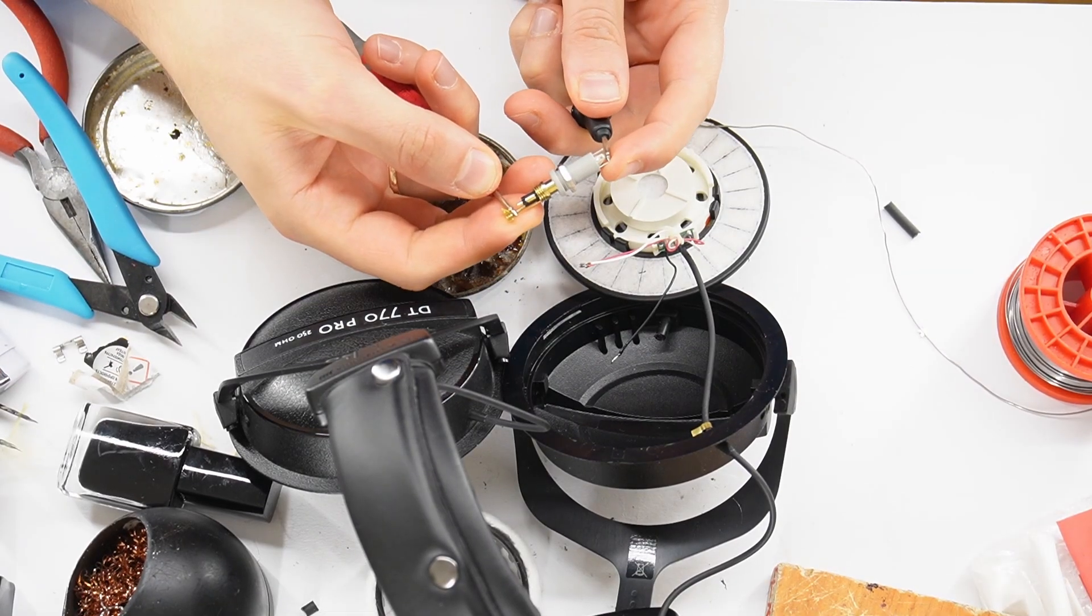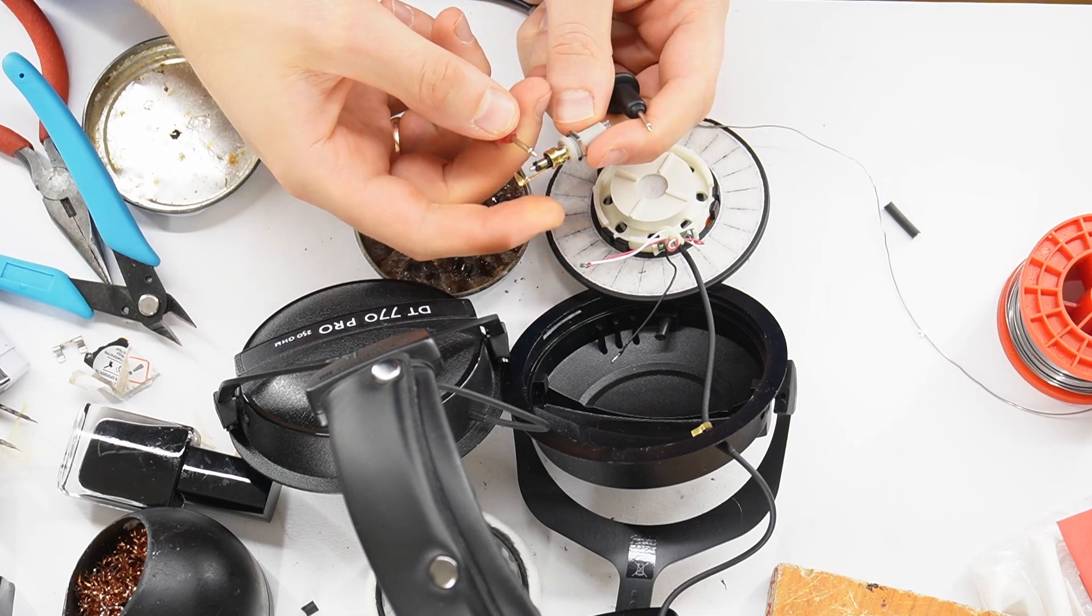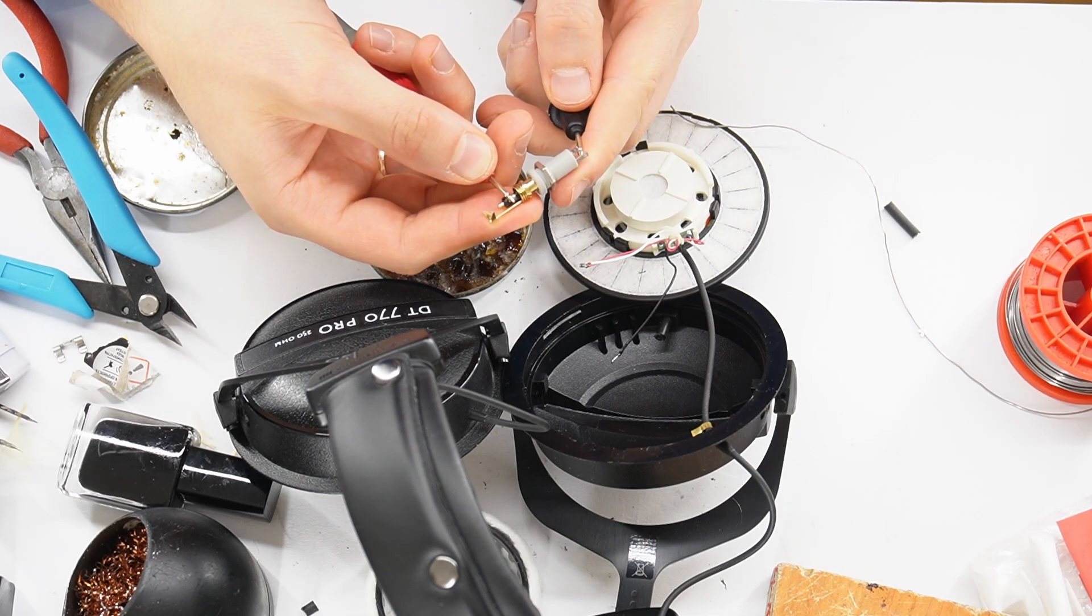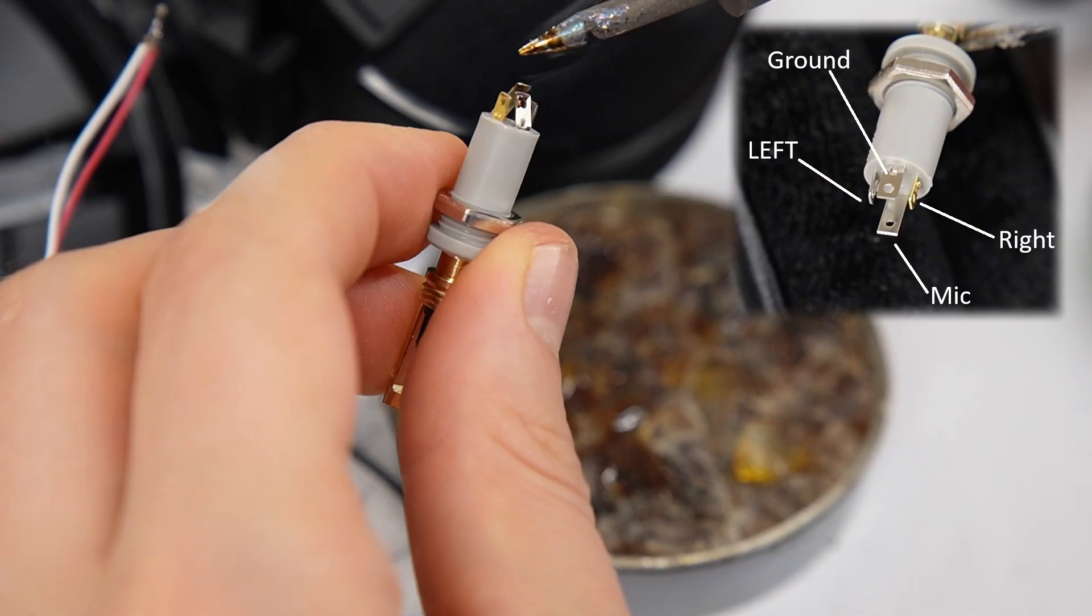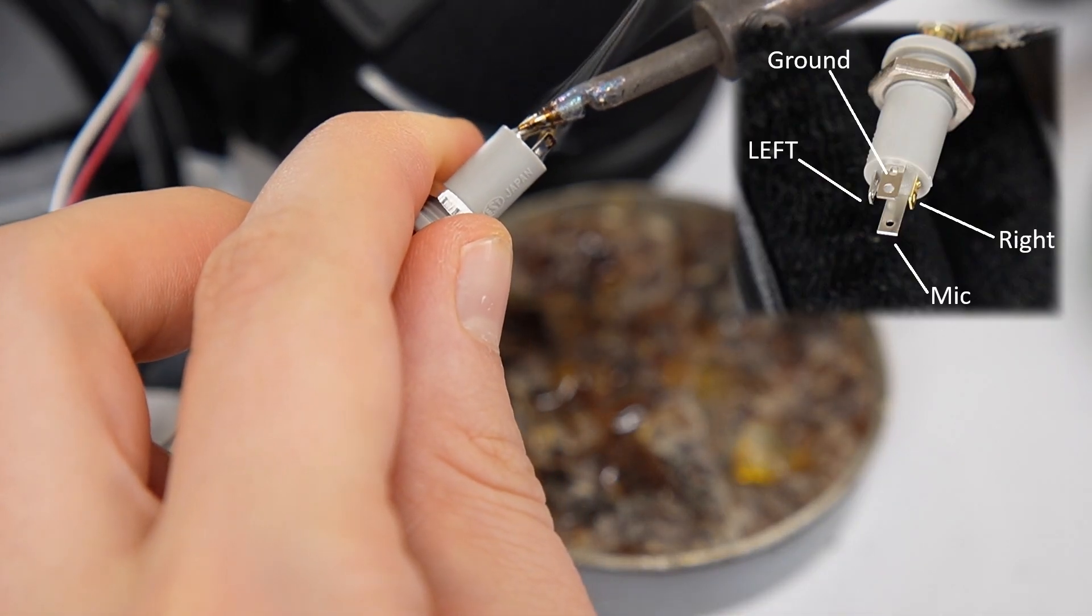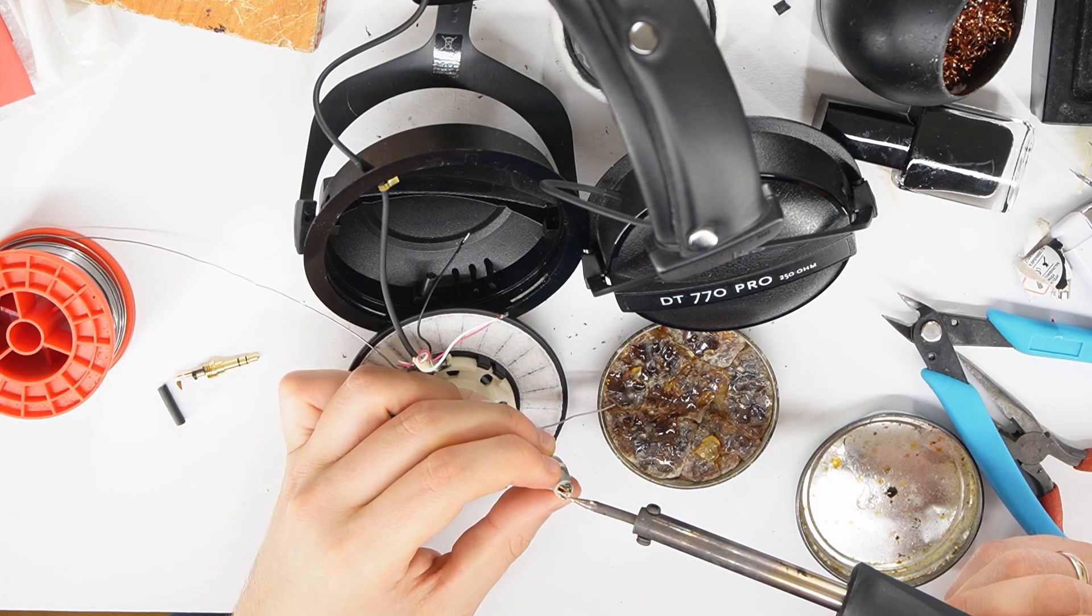Next, connect the 3.5mm jack to the 3.5mm socket to find the correct wiring, which pin corresponds to left, right, and ground. Since my socket is 4-pole, I connect the ground and microphone contacts together. Tin all socket contacts. This makes soldering easier.